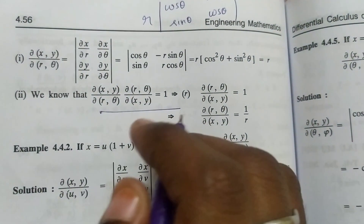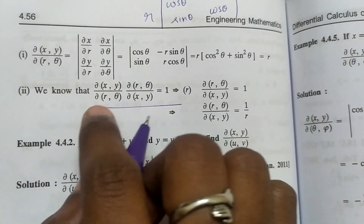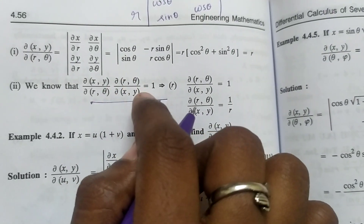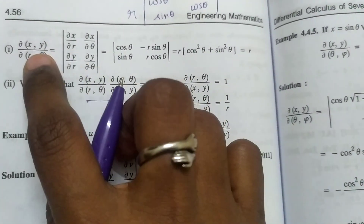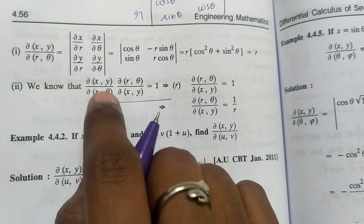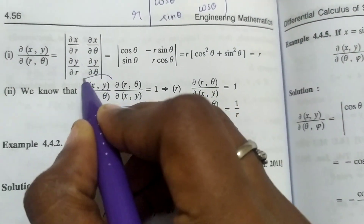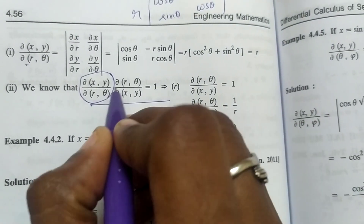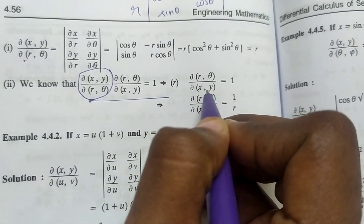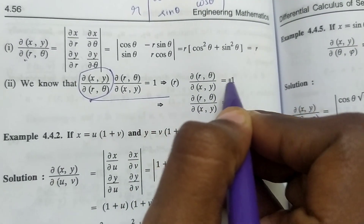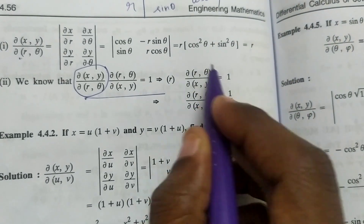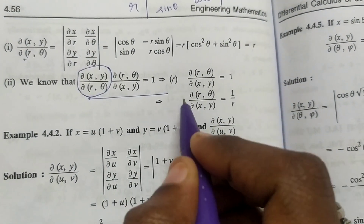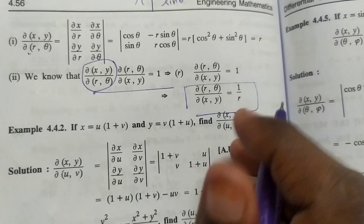We already know the inverse property: ∂(x,y)/∂(r,θ) × ∂(r,θ)/∂(x,y) = 1. Substituting the value r: r × ∂(r,θ)/∂(x,y) = 1, so ∂(r,θ)/∂(x,y) = 1/r. That is the answer.